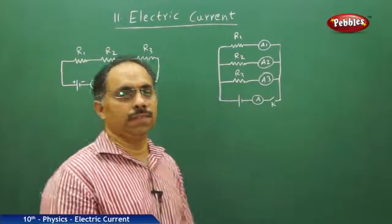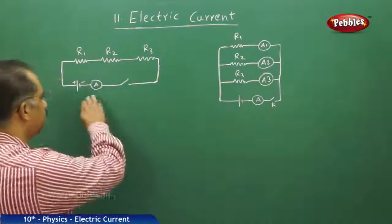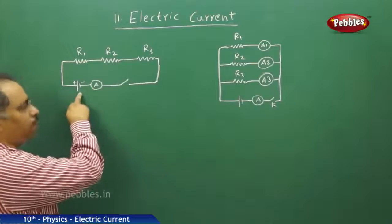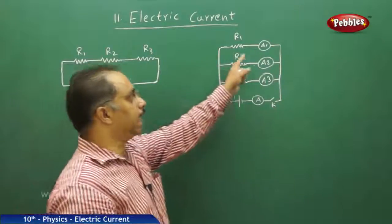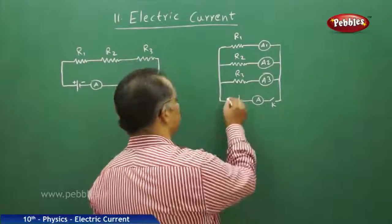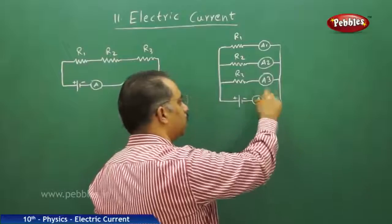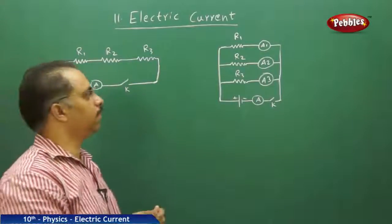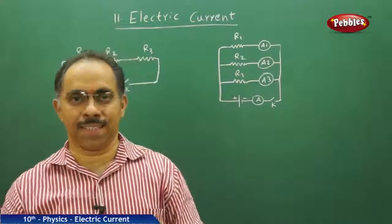We will consider two resistor circuits. On the left hand side, I have three resistances connected in series to a battery, where A is the ammeter and K is the key. On the right side, I have three resistors connected in parallel to the battery, with the ammeter and a key. This is the parallel combination and this is the series combination of resistors. We will compare and derive the equivalent resistance of each combination.